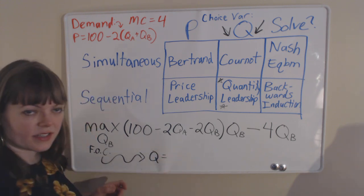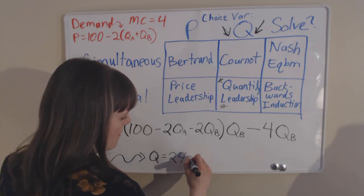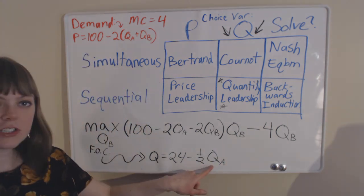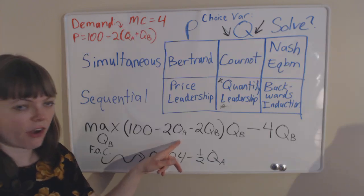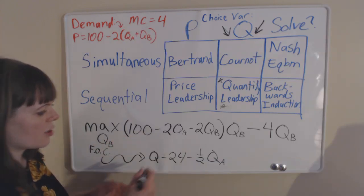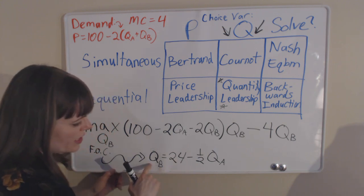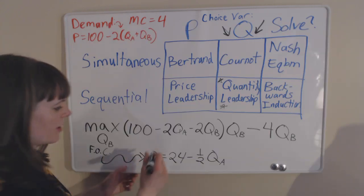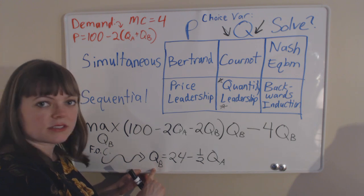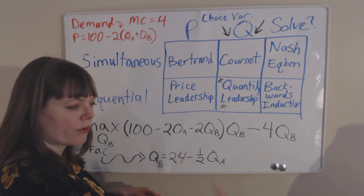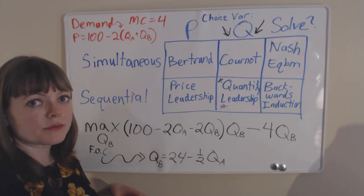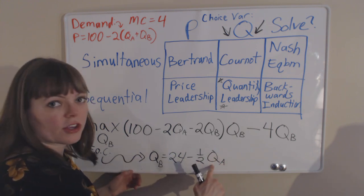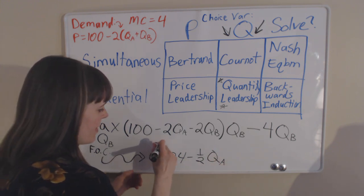That value in this case is going to turn out to be 24 minus 1 half QA. It's not a huge surprise that it's a function of QA, because QA is an exogenous variable in this particular function. So what we have here is a relationship between QB and QA, and this is going to be our best response function. It's firm B's best response to the choice of firm A.